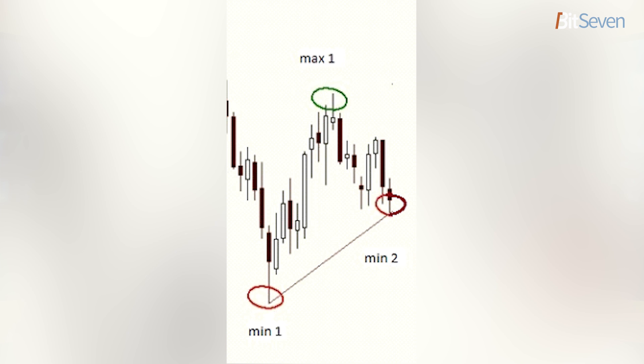A trend is a rising or falling line of price change, where each subsequent maximum or minimum is higher or lower than the previous one. To determine the beginning of a trend, we observe two minimums and one maximum on the price chart — the second one is higher than the previous one. We then assume the appearance of a second maximum, which will be higher than the previous one.